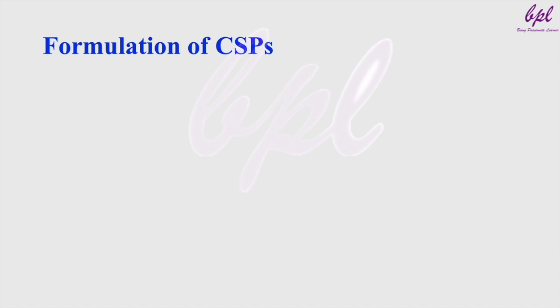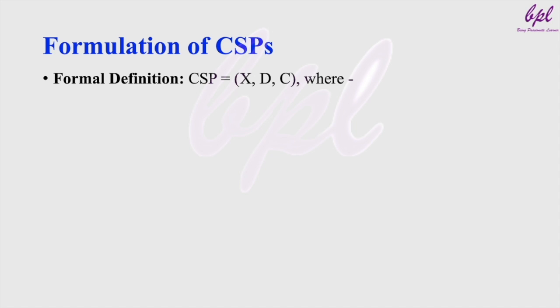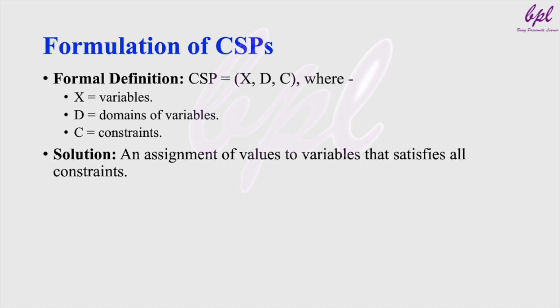A CSP can be formally defined as a tuple (X, D, C), where X represents the variables, D represents the domains of the variables, and C represents the set of constraints. A solution to a CSP is a complete assignment of values to variables that satisfies all of the constraints.